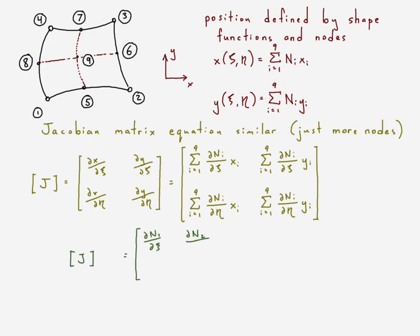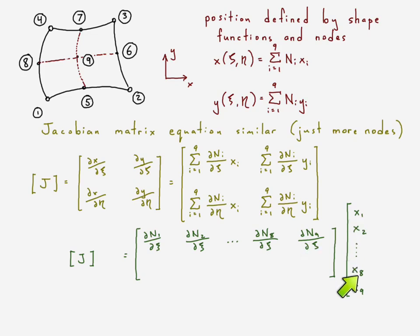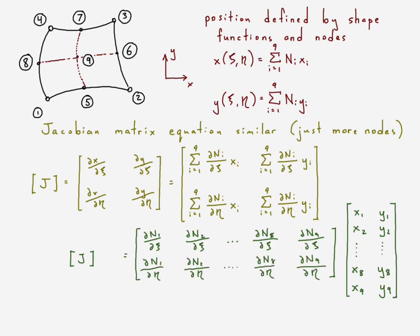Writing out the Jacobian matrix explicitly — with some ellipses because the slides aren't quite big enough — we can see that each row and column combination produces the corresponding component of the two-by-two Jacobian matrix, where the entries are the derivatives of x and y with respect to the natural coordinates xi and eta.